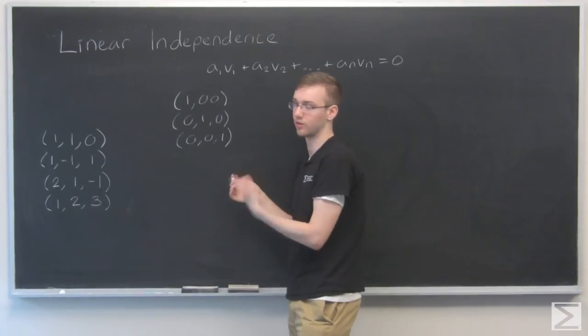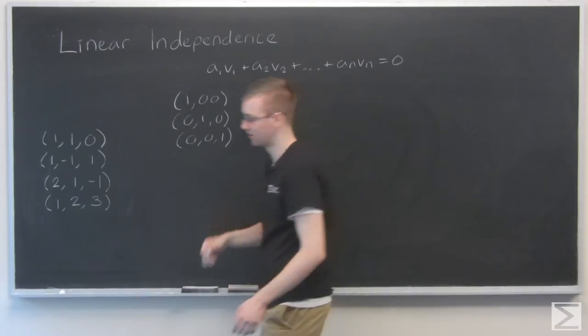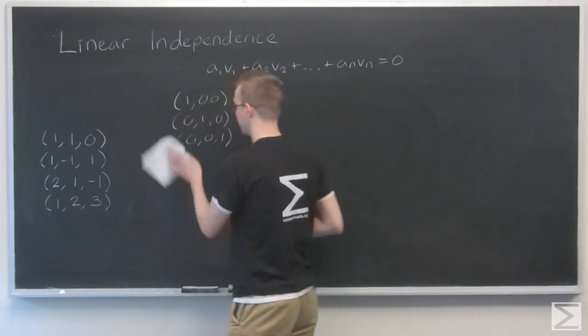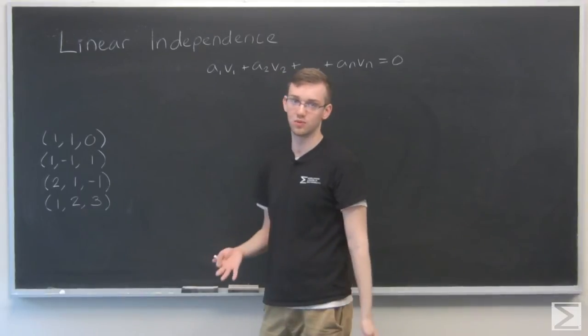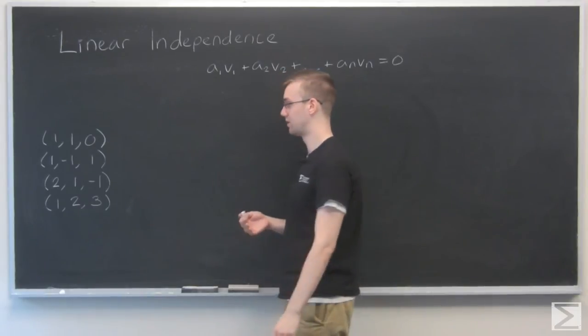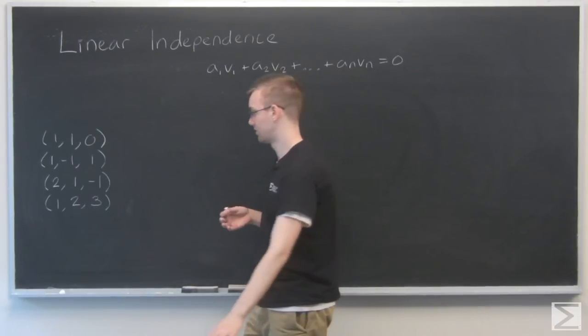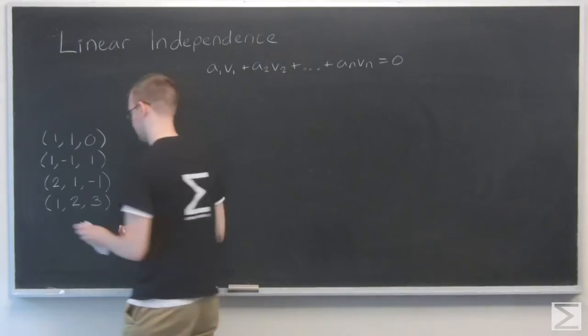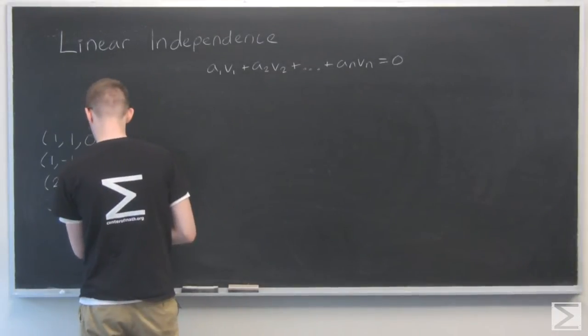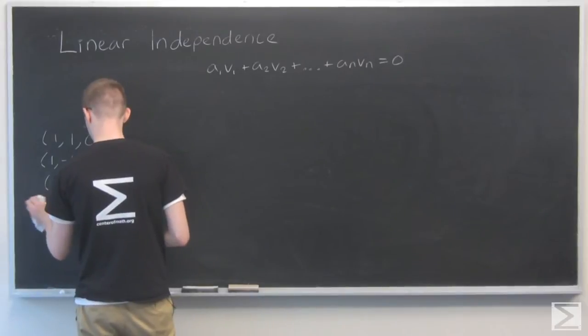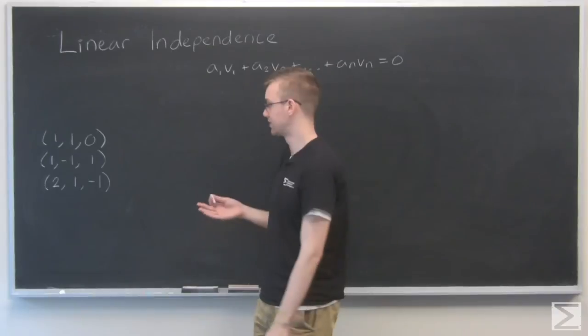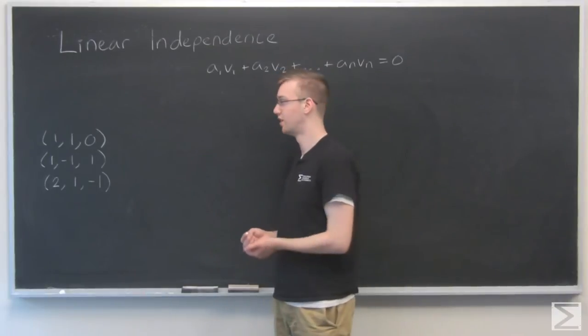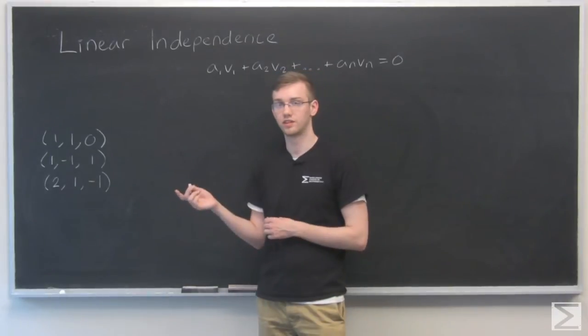So these are the most basic linearly independent vectors and there are only three of them. We can't add more or we get linear dependence. So because there are four vectors right here I can just tell you right away one of them is going to be irrelevant. So I'm just going to get rid of this third one. So now I only have three vectors. This is a more legitimate problem.